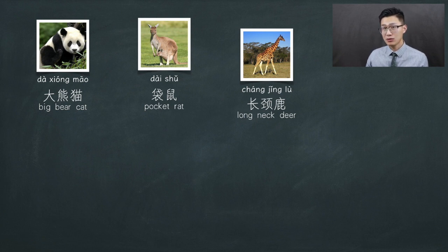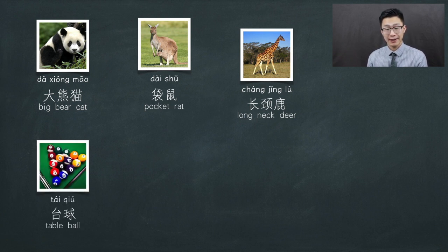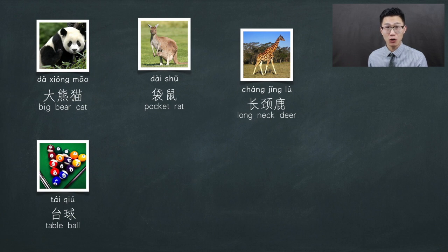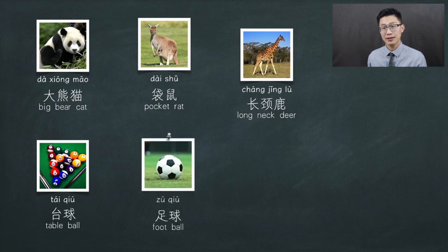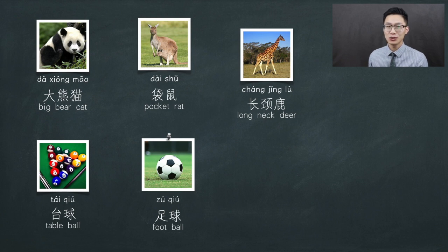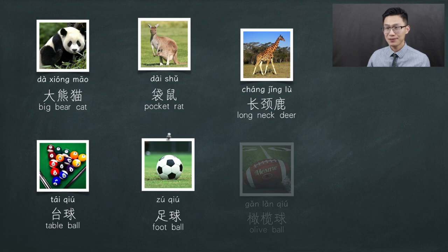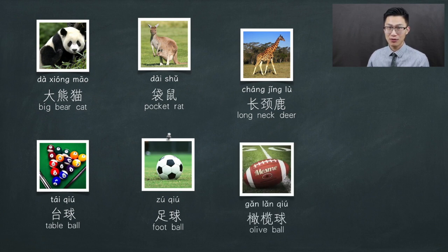Let's take a break on animals and move to sports. How about a ball game played on a table? A table ball — tai qiu for ping pong. And here comes the popular one: what would you call a ball game that uses the foot to play? Football — zu qiu. For American football, we call it olive ball — gan lan qiu. It's olive-shaped ball.